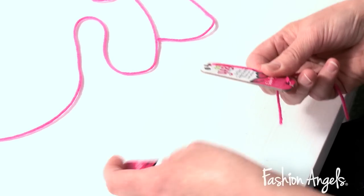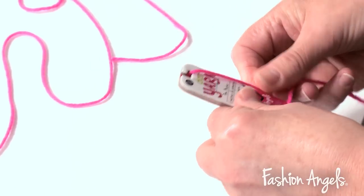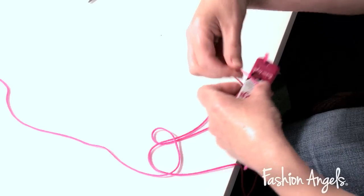And then we're going to take pom maker number two and place it beneath the first pom maker. Then we are going to measure 14 feet of pink yarn and wrap it around the two pom makers.